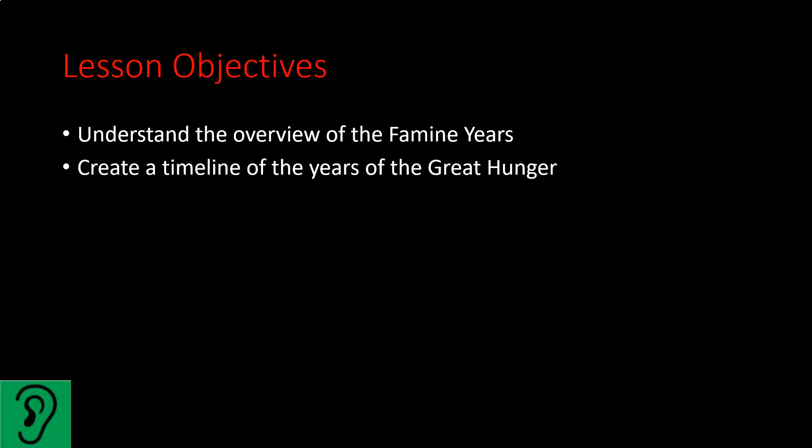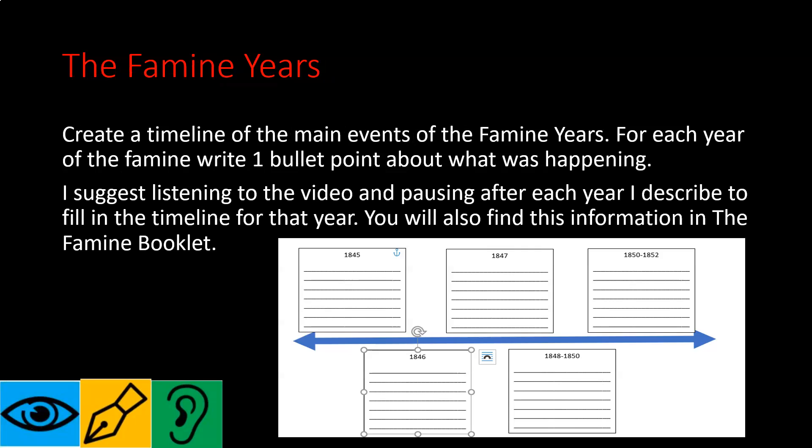For today, we're going to move on to understanding an overview of the famine years, and then we're going to create a timeline of the years of the Great Hunger. To finish off, we'll have a quick look at a primary source — a newspaper article from the time of the famine — and look at what we can learn from that.